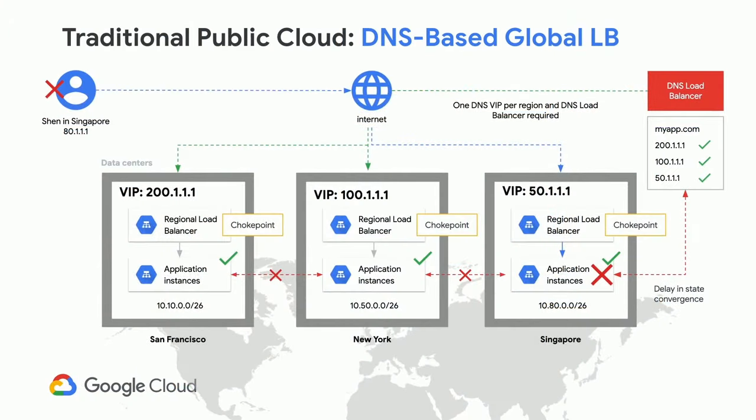Now I'm going to move into our Layer 7 load balancers — what we call our HTTP load balancers or Google Cloud load balancers. First, I want to talk about DNS load balancing, because customers often ask why we don't recommend it. The challenge with DNS-based load balancing is illustrated here: if you're running multiple backends in various regions, you have various DNS records pointing to those regions.